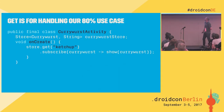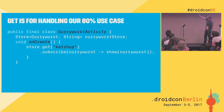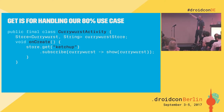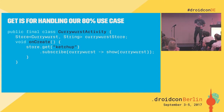This covers the 80% case. We have a store, we get a currywurst out of it, we specify the key — in this case it's a topping, ketchup. We call store.get(ketchup), subscribe, and get a currywurst out of it, then pass it to our view layer to show.